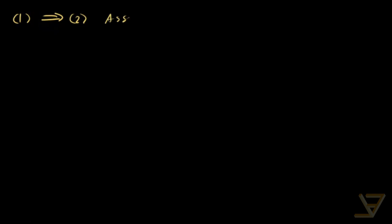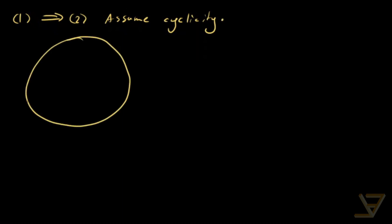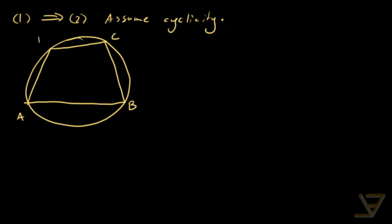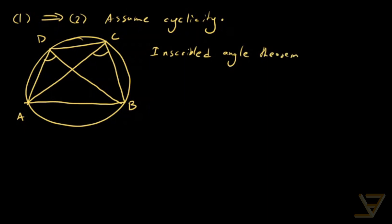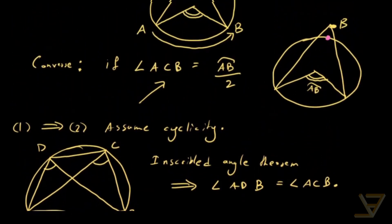Let's prove that one implies two. This is pretty immediate. Assume cyclicity. We have a quadrilateral with vertices A, B, C, D, and we draw the two angles. By the inscribed angle theorem, angle ADB is equal to angle ACB. So that's what we wanted to prove: ADB is equal to ACB.